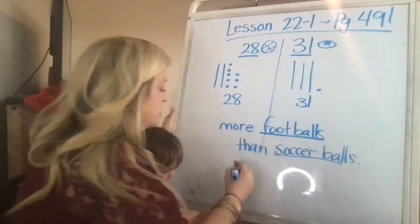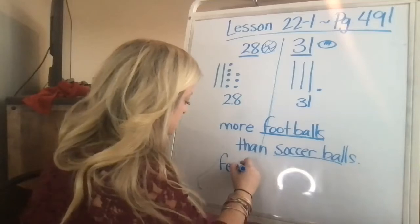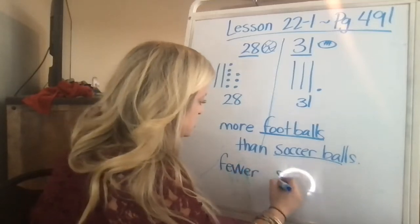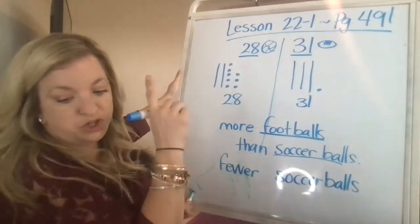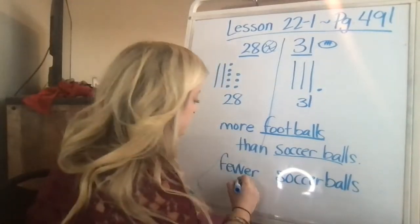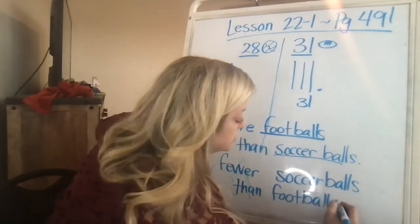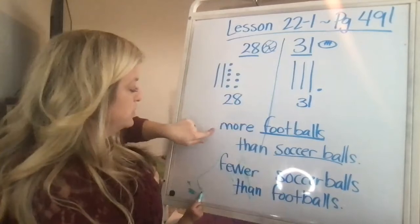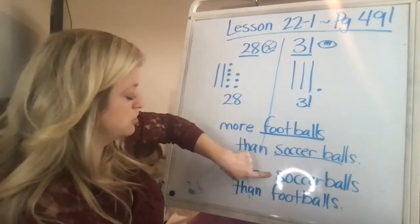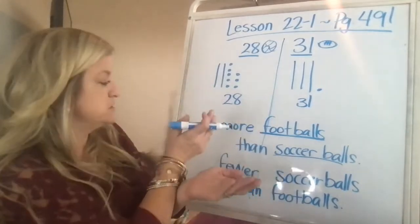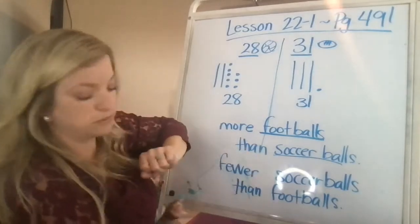There are fewer soccer balls. If you don't know how to write the words, you can look up at the top. It says soccer balls and footballs, than footballs. So notice how these are opposite. If one is more, the other one has to be fewer. One is greater. One has to be less. So if I have more footballs than soccer balls, that means I have fewer soccer balls than footballs. So they're flipped. Footballs comes first, then soccer balls, because there's fewer soccer balls than footballs.